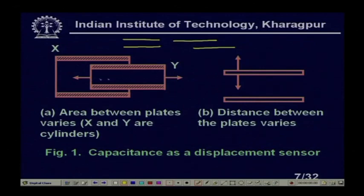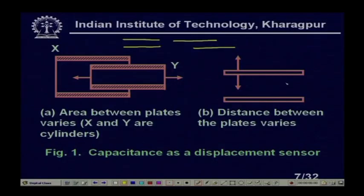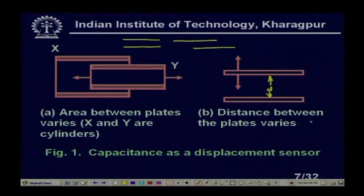If I vary Y - that is, push it in one direction - the capacitance value changes, and this can be measured and calibrated. The distance D between the plates can also be varied. If D increases, the capacitance decreases. This can also be utilized to make a displacement sensor. So, both by changing the area between the plates or the distance between the plates, we obtain a capacitance change that can be used as a displacement sensor.